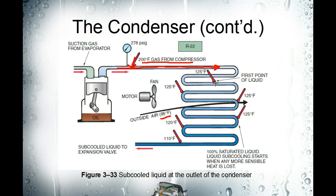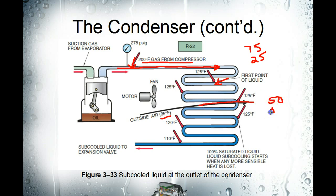The refrigerant will start changing state from gas to liquid. Just like in the evaporator coil, partway through the coil it's going to be 75 percent liquid and 25 percent vapor, and then theoretically halfway through it will be 50 percent vapor and 50 percent liquid. We're still saturated here — still on the pressure temperature chart. If you could measure each point of the condensing coil, you'd read 125 degrees, because as long as it's changing state at 278 psig it's always going to be 125 degrees.